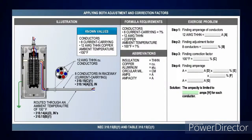And you've got another exercise: eight current-carrying number 12 THHN conductors routed through an ambient of 100°F. Use the 90°C column. Get your adjustment factor for eight conductors from Table 310.15C1, and your correction factor for 100°F from Table 310.15B1. Take the amperage of the conductor, multiply it by both percentages, and that's what your conductor is limited to. Pretty simple.